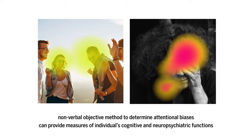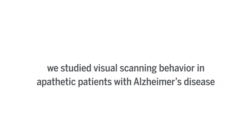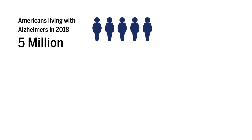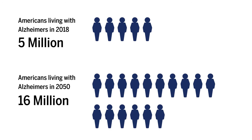In this work, we studied visual scanning behaviours in apathetic patients with Alzheimer's disease. In 2018, there are more than 5 million Americans living with Alzheimer's disease, and in 2050, there is an estimated 16 million with Alzheimer's disease. Symptoms of Alzheimer's disease include memory impairment, difficulty socialising, and apathy.